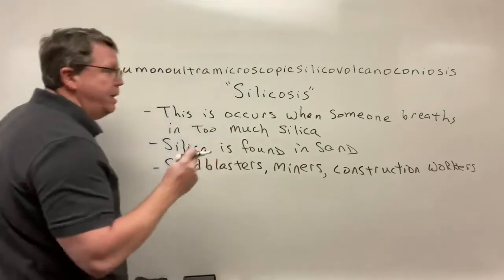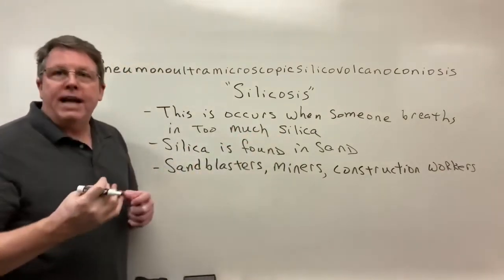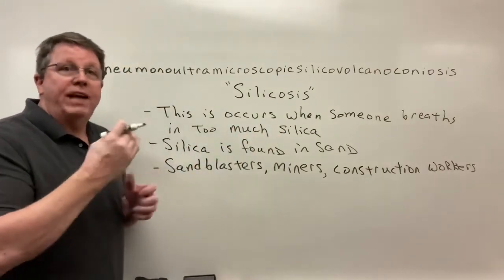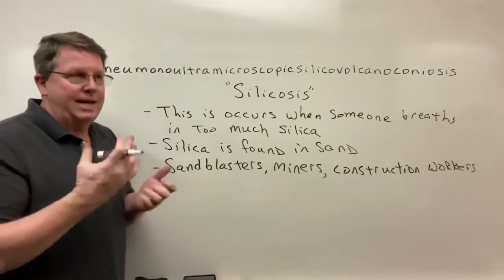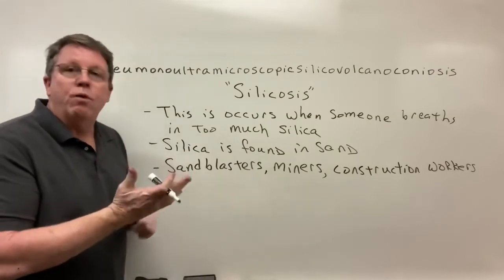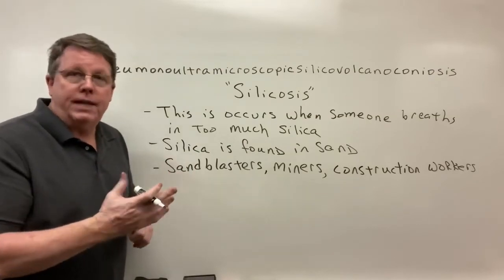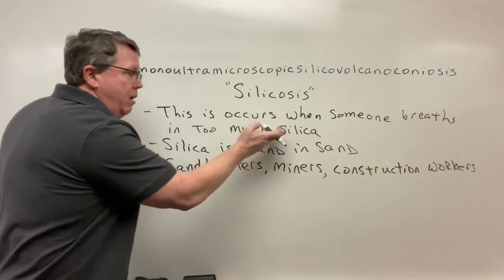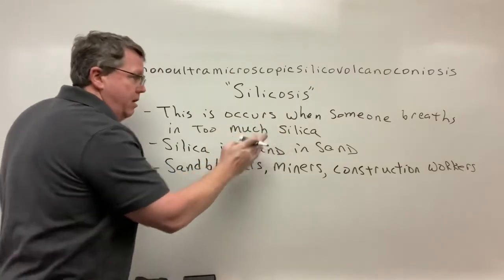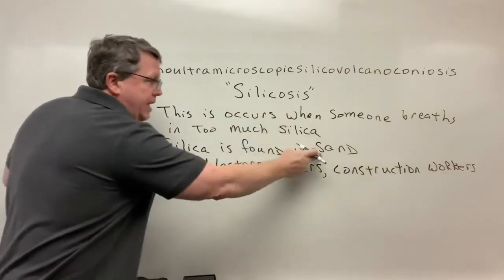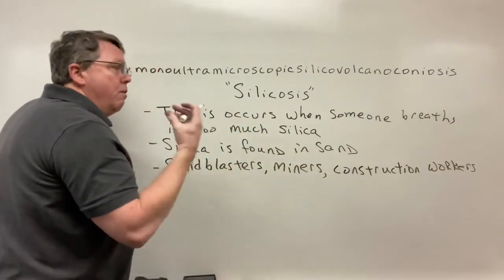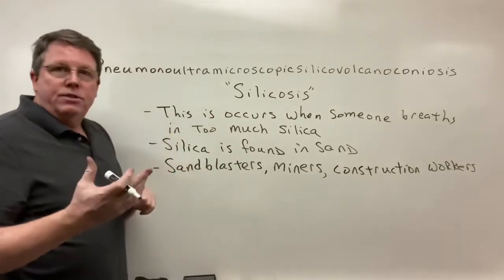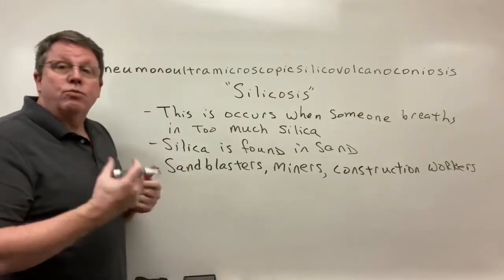As people breathe this in, imagine sandpaper rubbing against your skin — that's basically what happens here with the silica. It's found in sand, and it rubs against your bronchial tubes and air passages.